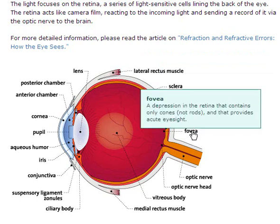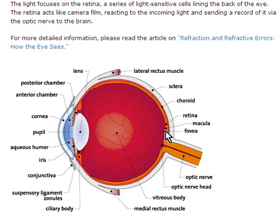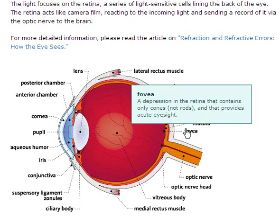The fovea has only cones, not rods, and can see the most detail. So this part of the eye is where you typically focus if you want to see something very, very clearly.